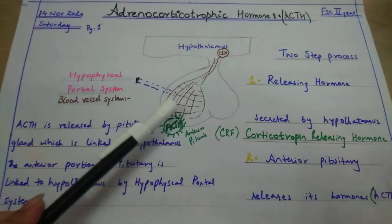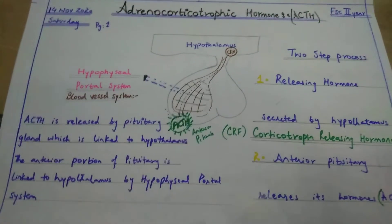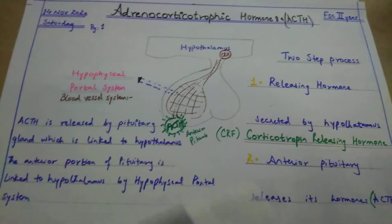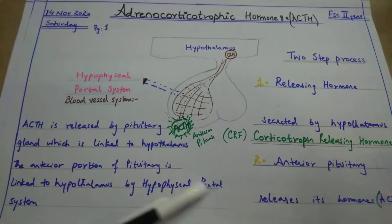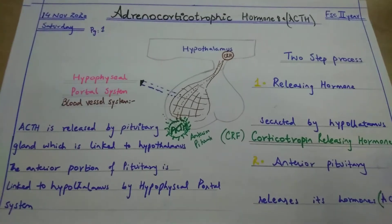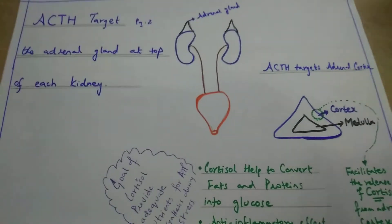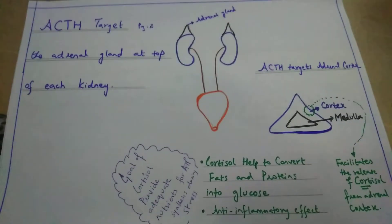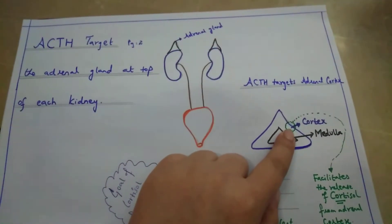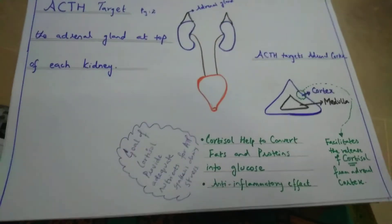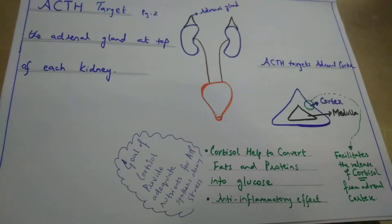After becoming part of the blood, this adrenocorticotrophic hormone targets the adrenal glands which are placed on top of the kidneys. The adrenal glands have two parts — the cortical part and the medullary part. ACTH stimulates the cortical part, and the cortex then releases cortisol.